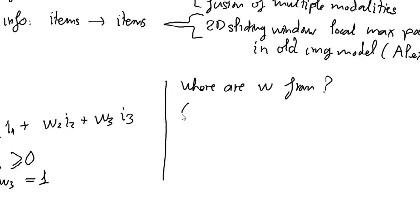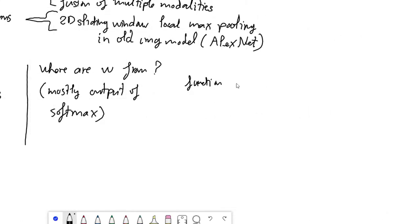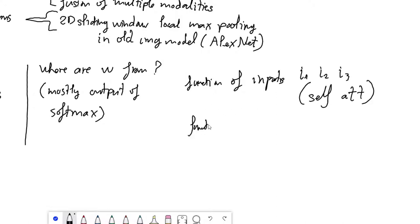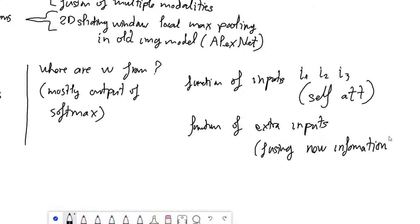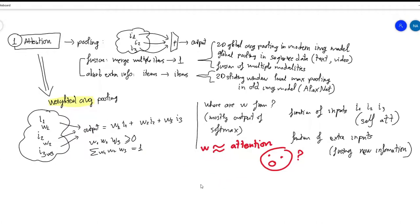So where do the weights w come from? They must be a probability mass distribution, so they come from the output of a softmax. They are usually a function of the input itself — i1, i2, i3 — in which case people call it self-attention. They can also be a function of extra input where you want to fuse new information into your model. For different papers or projects, people may propose different approaches to compute these attention weights.